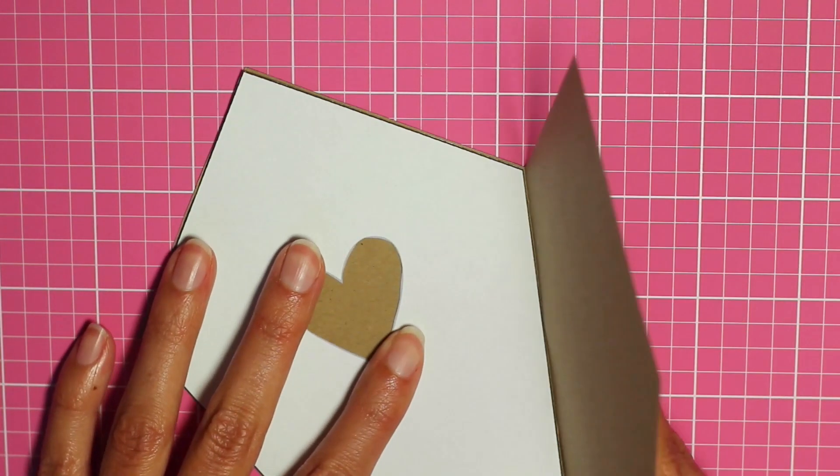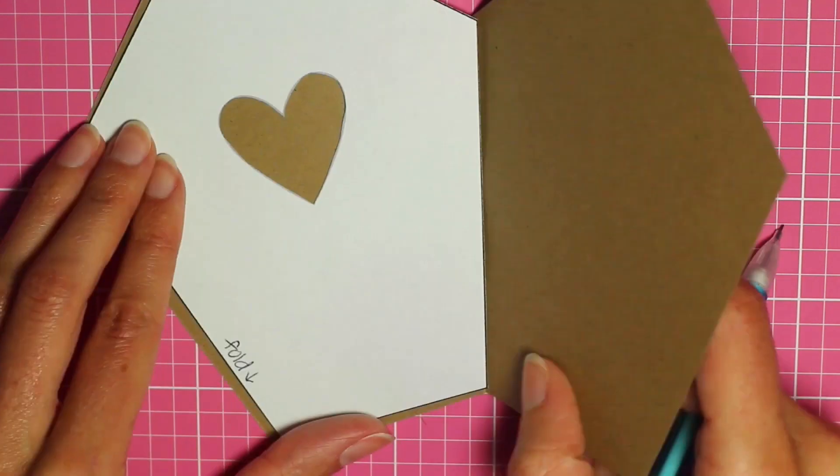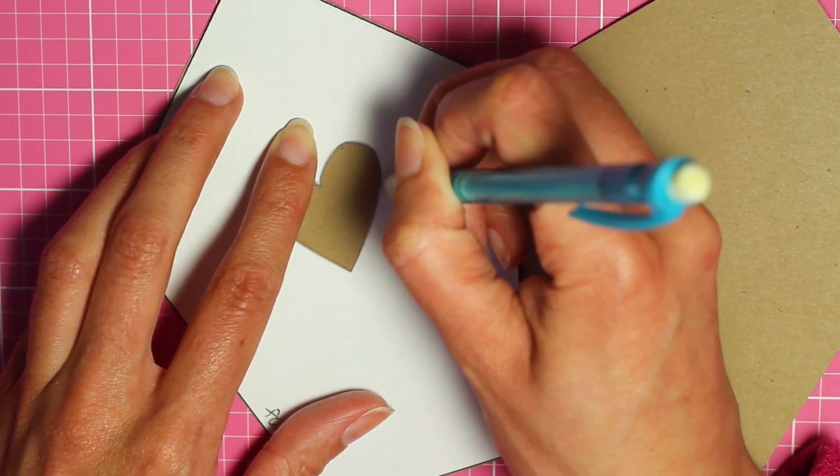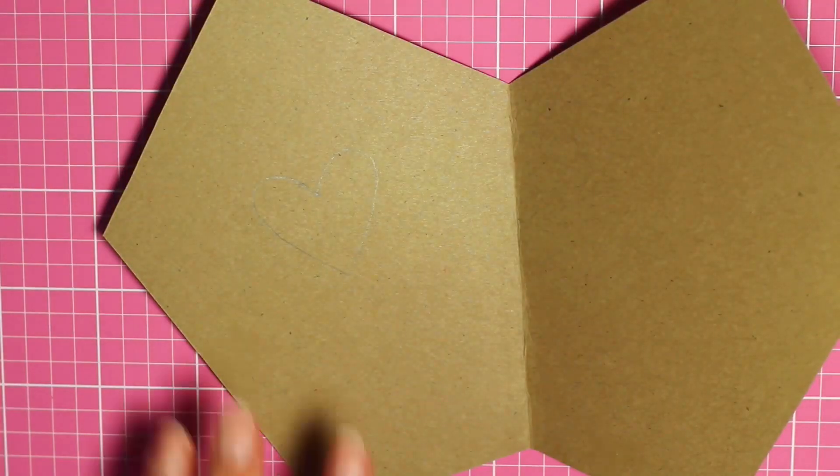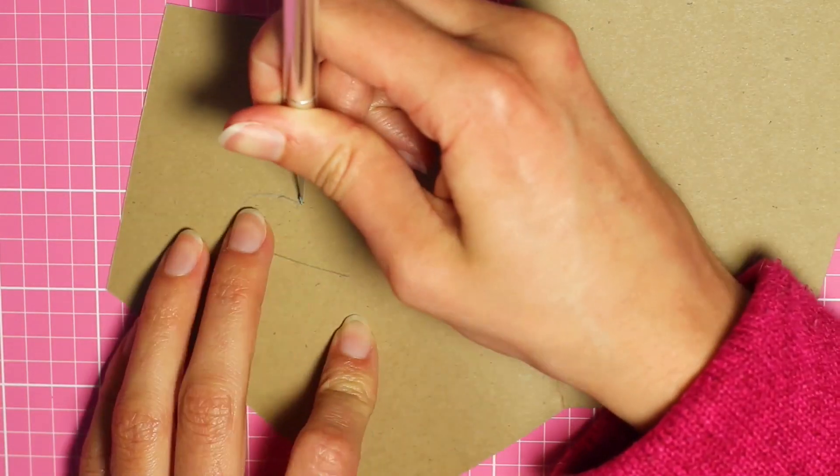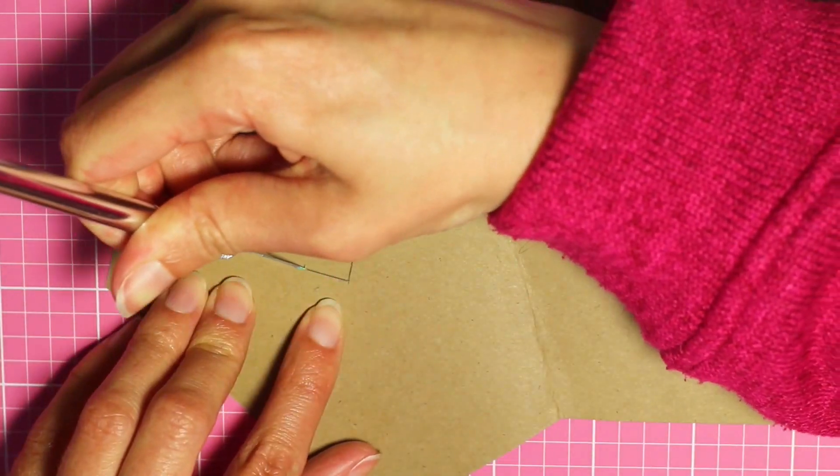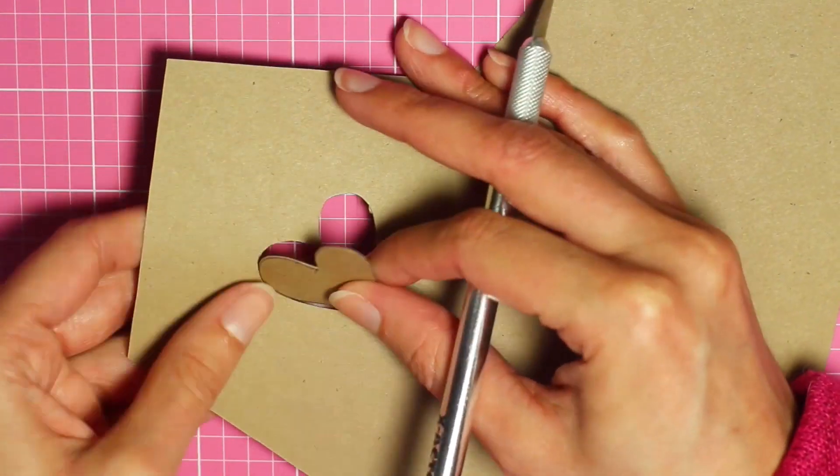Then once it's cut out open it up and then just place this pattern on the inside on this side and then trace around the heart here. Then we're going to go ahead and take the exacto knife and cut out the heart. Cutting it on the back side will result in a cleaner cut on the front.